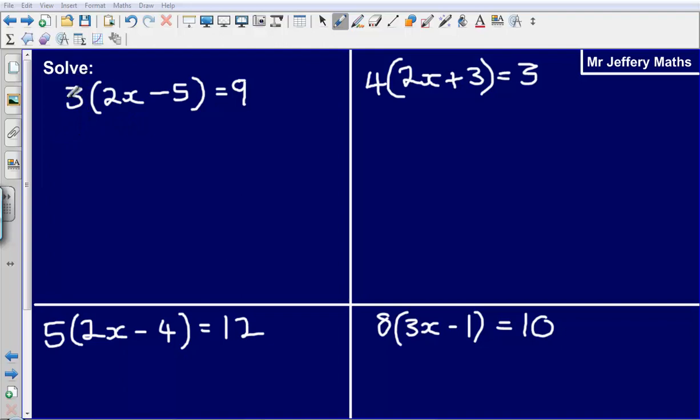So to begin with, we've got 3 bracket 2x minus 5 is equal to 9. The first thing that we're going to do here is we're simply going to expand these brackets.